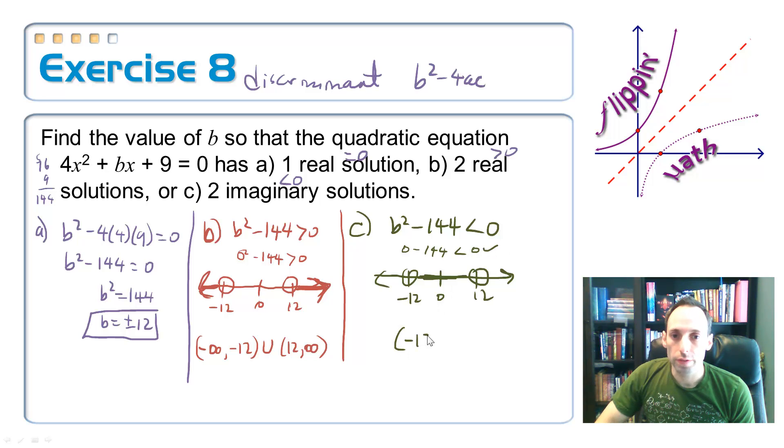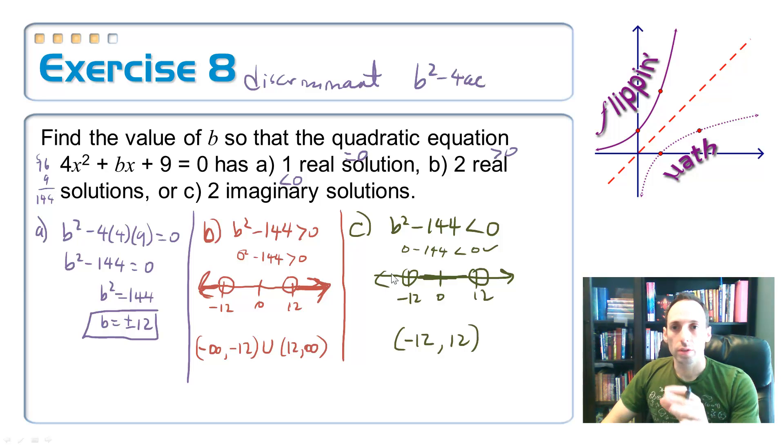This time, negative 12 all the way up to positive 12. If I were to pick anything in there, I would have two imaginary solutions. So that wraps up objective three here on solving quadratic inequalities with one variable.